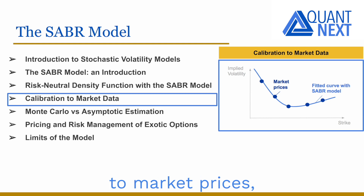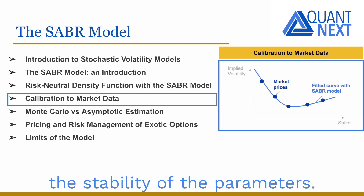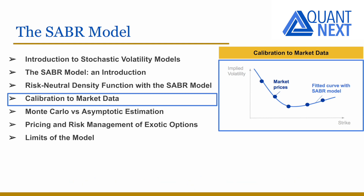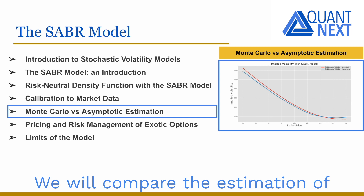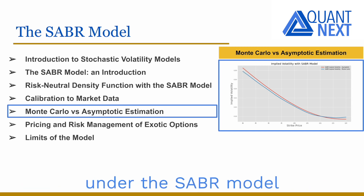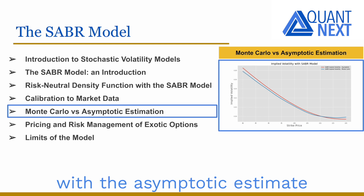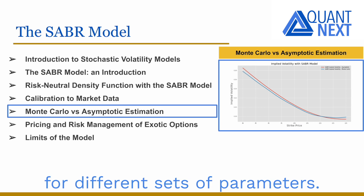We will also see how to calibrate model parameters to market prices, discussing how to improve the stability of the parameters. We will compare the estimation of the true value of vanilla options under the SABR model by Monte Carlo simulations with the asymptotic estimate for different sets of parameters.